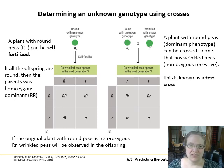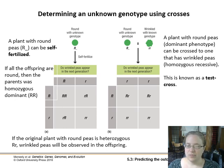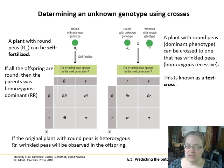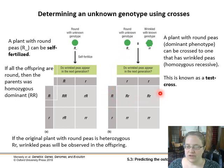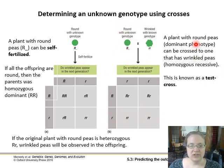Because we can't self-fertilize animals, if we don't know the genotype of a dominant individual we can do a test cross — crossing it to something we know is recessive. If wrinkled peas appear in the next generation, the parent had to be heterozygous. If all the offspring are round, the parent is homozygous dominant, contributing only the dominant allele. You would see half the offspring wrinkled only if the parent was heterozygous. So we use self-fertilization or a test cross to find the unknown genotype.